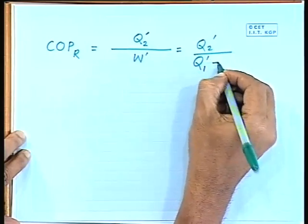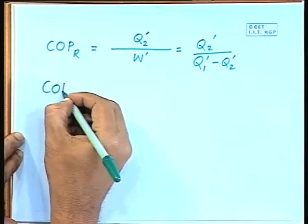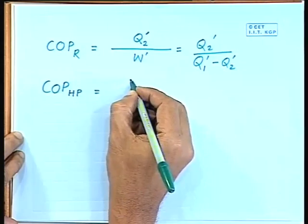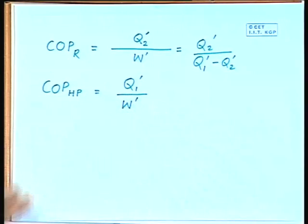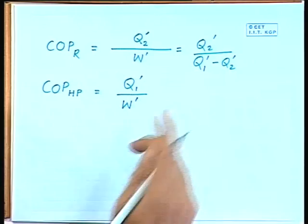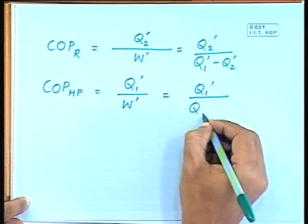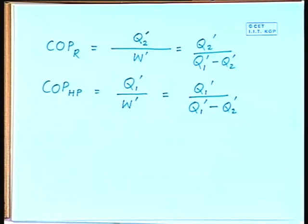We can write COP of refrigeration cycle as Q2' divided by Q1' minus Q2'. For the heat pump, Q1' is the desired effect produced, so COP of heat pump equals Q1' divided by Q1' minus Q2'. These are the two expressions for COP of a refrigeration cycle and a heat pump cycle.